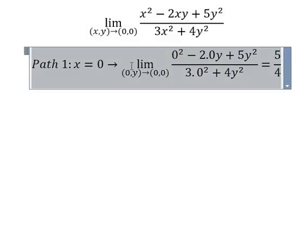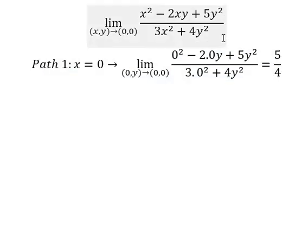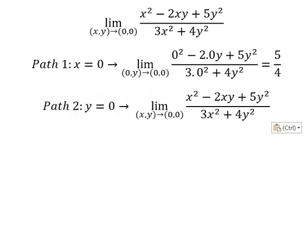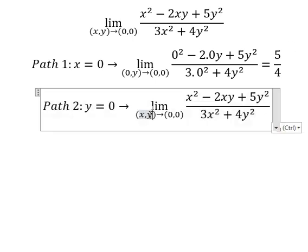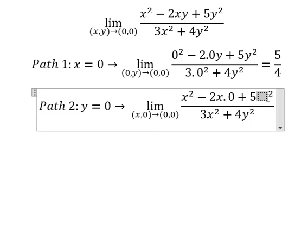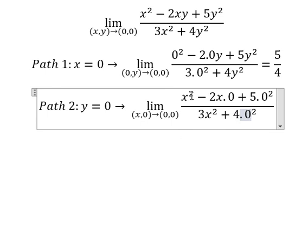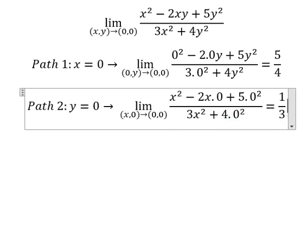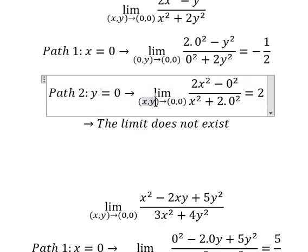Similar for path number two, which is y equals to zero. I will put zero in here, zero in here, and zero in here. So we have x² divided by 3x², which gives us one over three. I forgot to put zero in here.